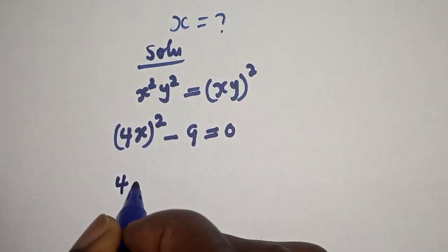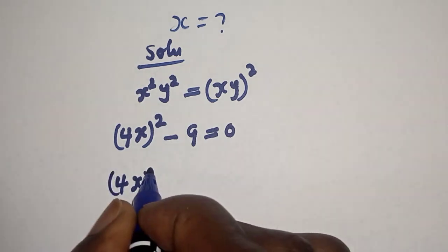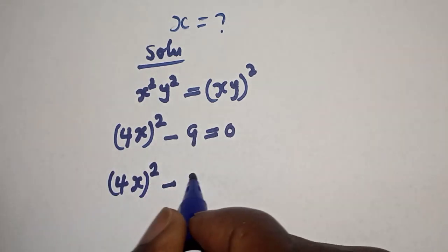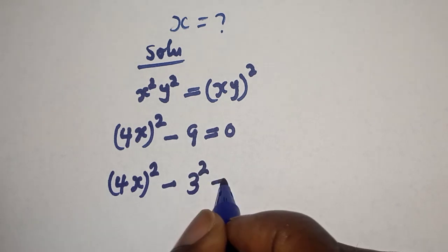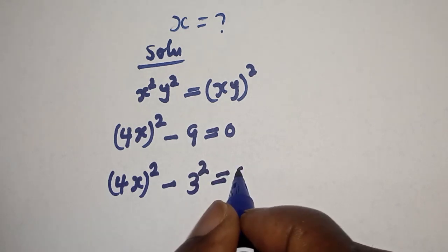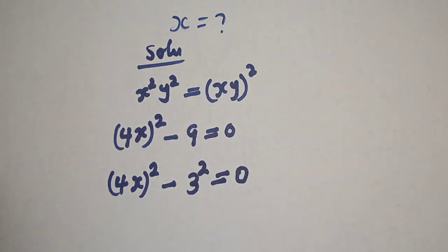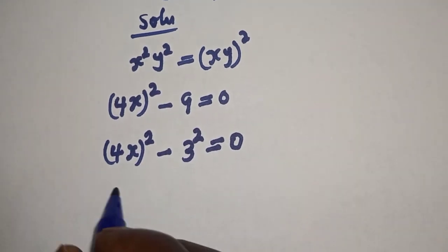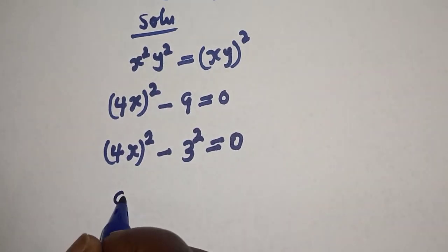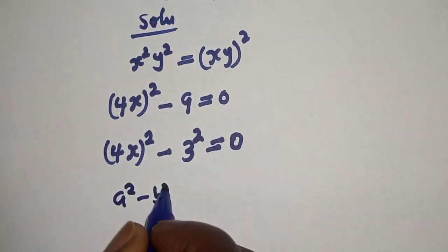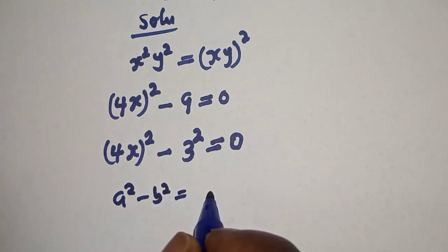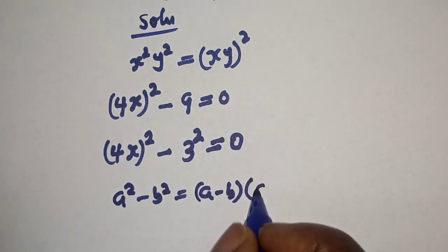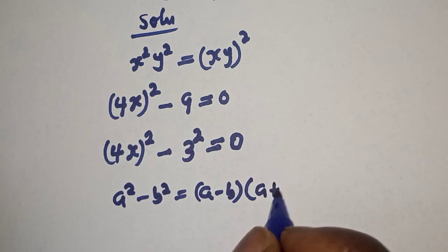And (4s)² - 9 can be written as (4s)² - 3² = 0. Now this is a difference of two squares. Take note that a² - b² is equal to (a - b) multiplied by (a + b).